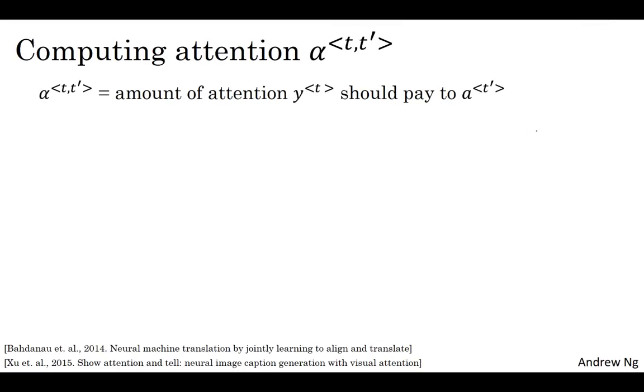Just to recap, alpha t t prime is the amount of attention you should pay to a t prime when you're trying to generate the t words in the output translation. Let me just write down the formulas and talk about how this works. This is a formula you can use to compute alpha t t prime. We're going to compute these terms, e t t prime, and then use essentially a softmax to make sure that these weights sum to one if you sum over t prime. So, for every fixed value of t, these things sum to one if you're summing over t prime. Using this softmax parameterization just ensures this property that they sum to one.